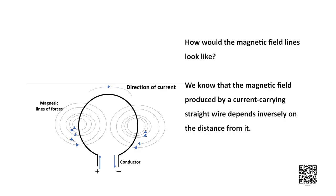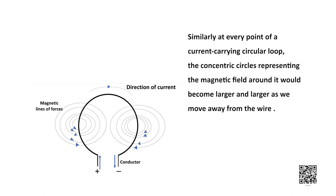We have so far observed the pattern of magnetic field lines produced around a current carrying straight wire. Suppose the straight wire is bent in the form of a circular loop and a current is passed through it. The magnetic field produced by a current carrying straight wire depends inversely on the distance from it. Similarly, at every point of the current carrying circular loop, the concentric circles representing the magnetic field around it would become larger and larger as we move away from the wire.